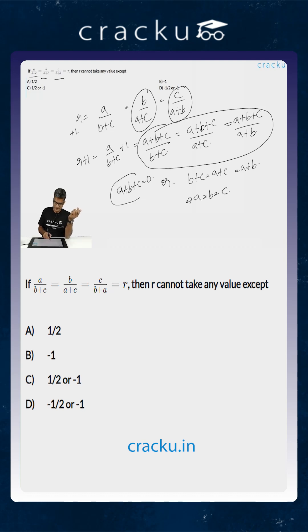So either a plus b plus c is equal to 0, or a is equal to b is equal to c. If a is equal to b is equal to c, the value of r is equal to 1 by 2.